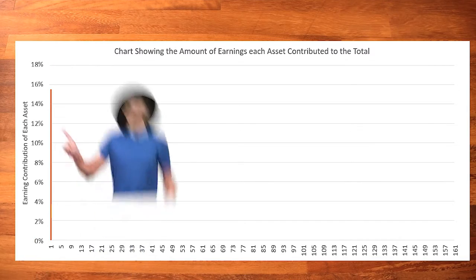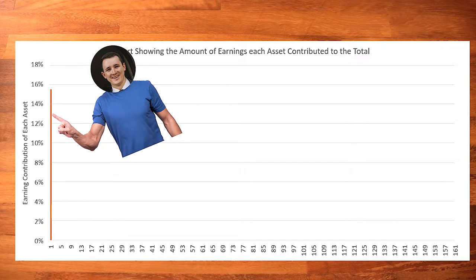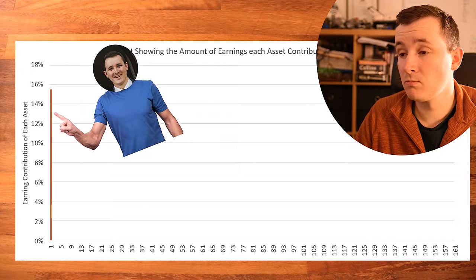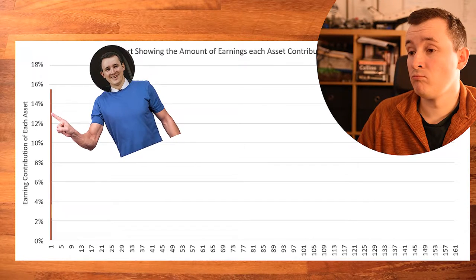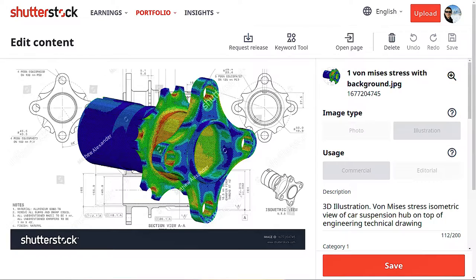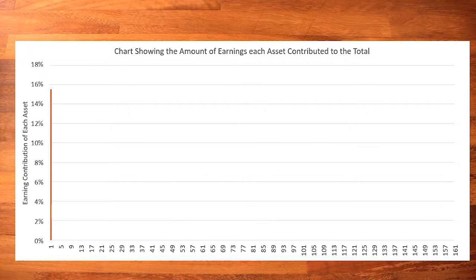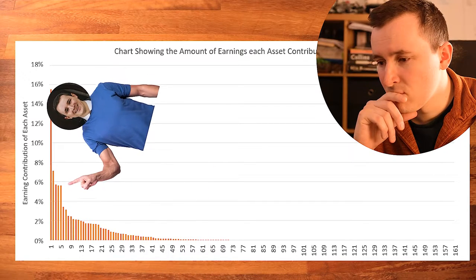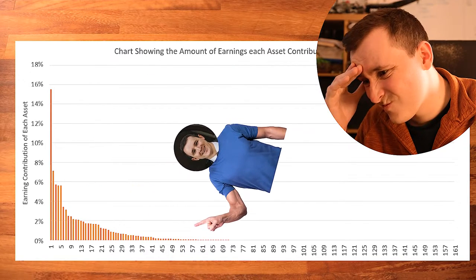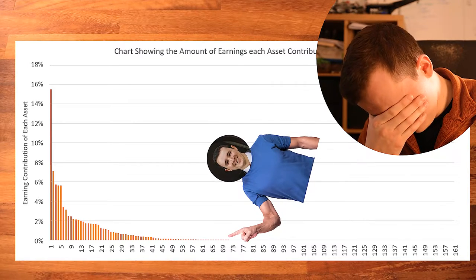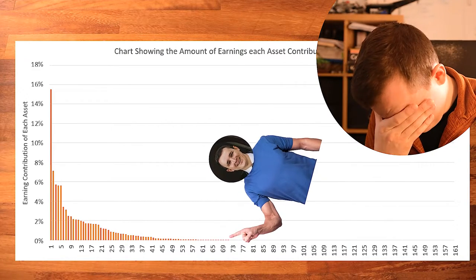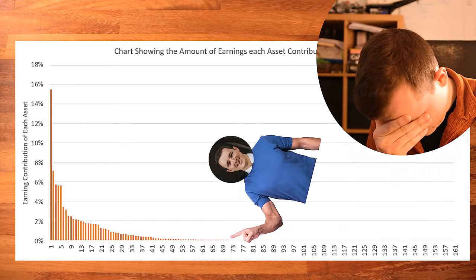The best earning asset is responsible for almost 16% of the total earnings I've received from Shutterstock — just one image. Adding the rest of the bars in, you get an interesting pattern: a steep drop-off in how much each asset has contributed towards the total earnings. It looks like the images past number 73 don't contribute anything towards my total earnings.